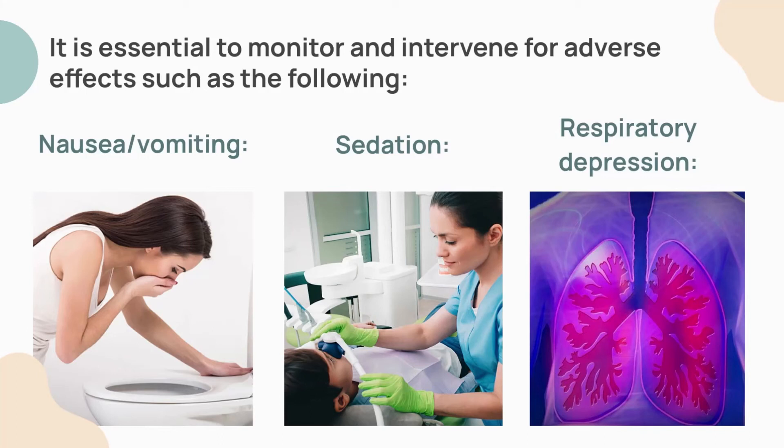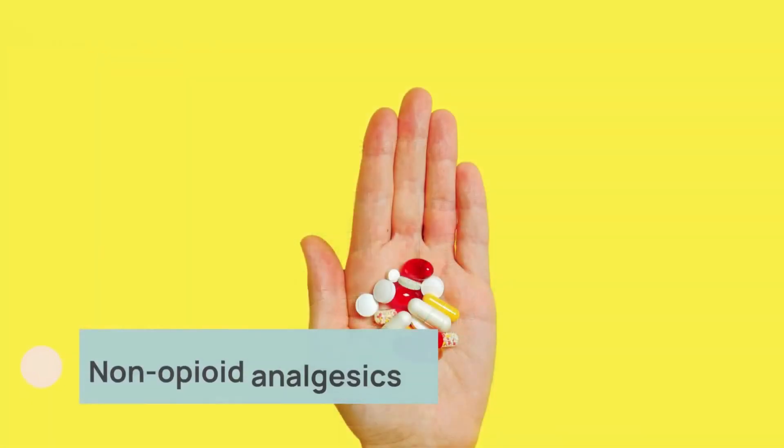Monitor for sedation by assessing level of consciousness and taking safety precautions — sedation usually precedes respiratory depression. Monitor respiratory rate prior to and following opioid administration. Initial treatment of respiratory depression and sedation is generally a reduction in opioid dose.